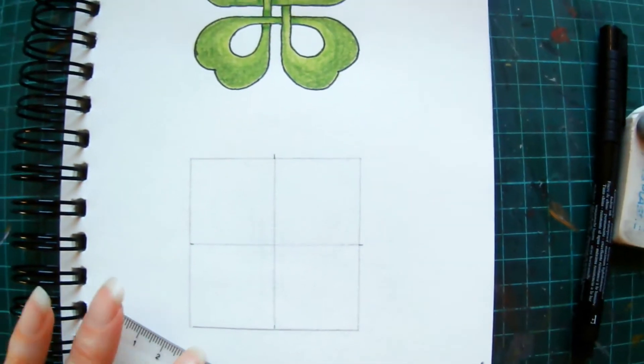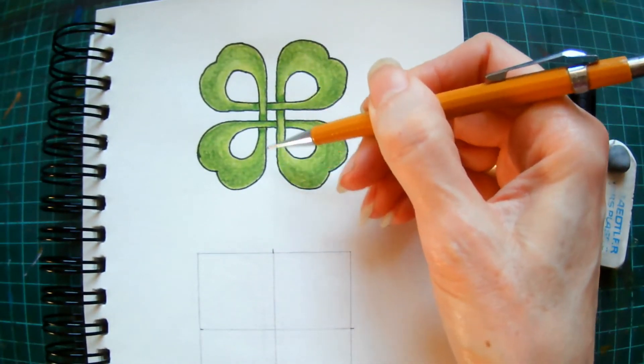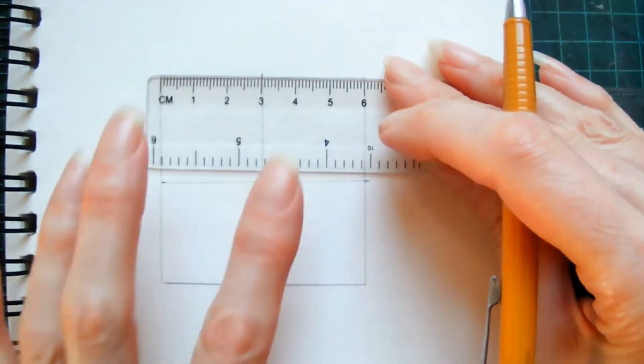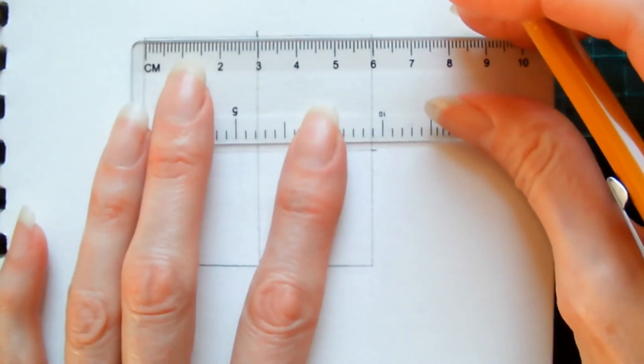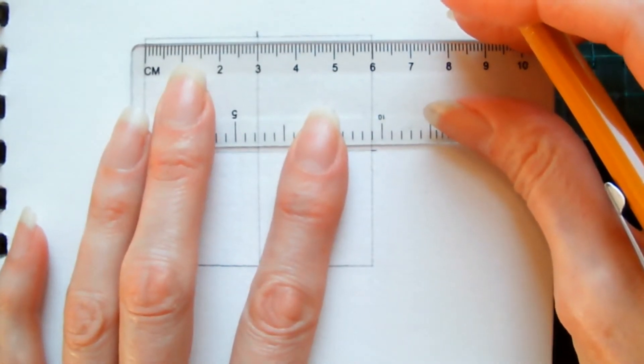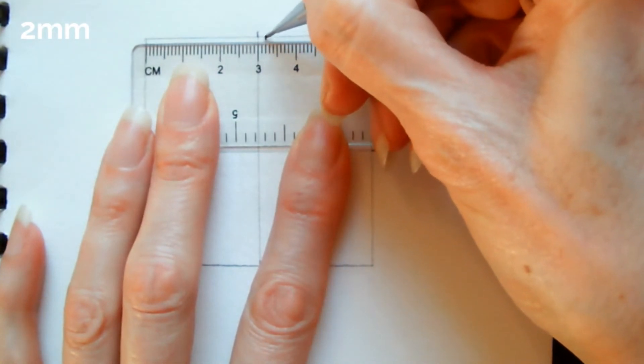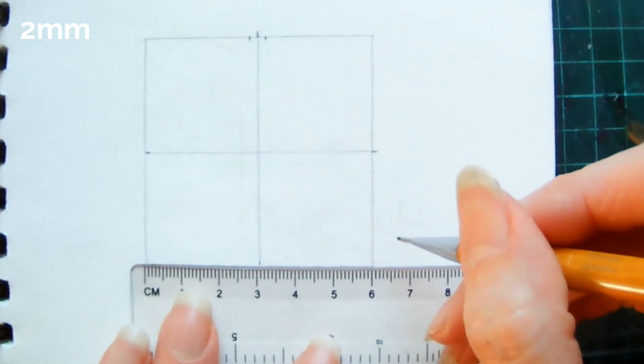The next set of guidelines we're going to set up is actually this space in between the four leaves of the clover. So to do that, on either side of these lines that you've just drawn, mark off two millimeters to either side, so two millimeters to the right and two millimeters to the left, and repeat that on both the top and bottom.